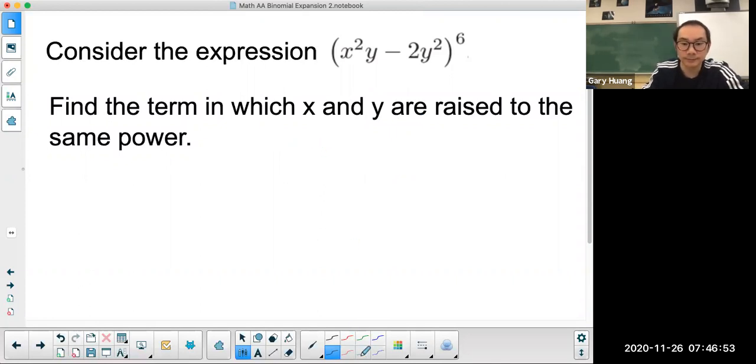Now what do we do? Anytime we get a binomial expansion question, you write down your binomial theorem: n choose r, a to the power of n minus r, b to the power of r.